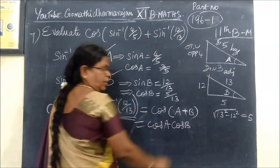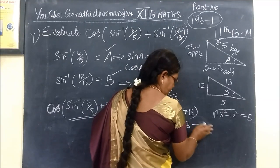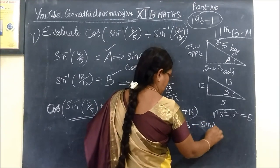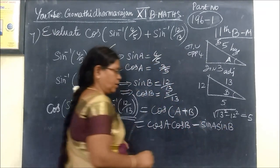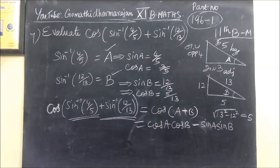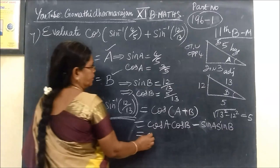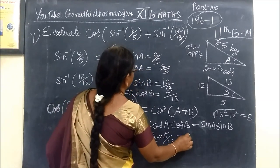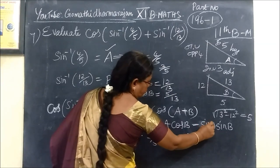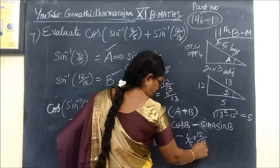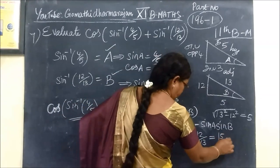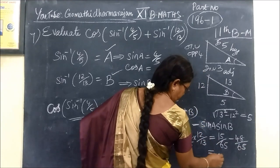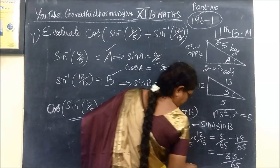This is equal to cos A cos B minus sin A sin B. So we will substitute the values. Cos A is 3 by 5 into cos B 5 by 13 minus sin A 4 by 5 into sin B 12 by 13. So this is equal to 15 by 65 minus 48 by 65. This is equal to minus 33 by 65. So this is question number 7.